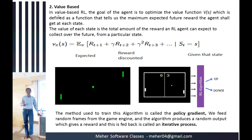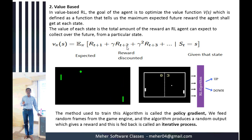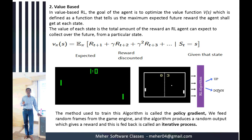The second approach is value-based, which is very important in reinforcement learning. In value-based reinforcement learning, the goal of the agent is to optimize the value function V(s), defined as the maximum expected future reward the agent shall get from state s. The formula is: V^π(s) = E[r_t1 + γ·r_t2 + γ²·r_t3 + ...| state = s]. In Pong, for example, only two actions — up or down — are possible.